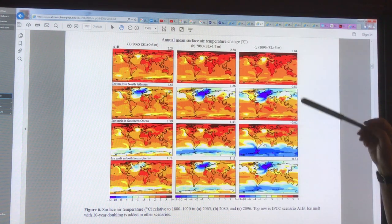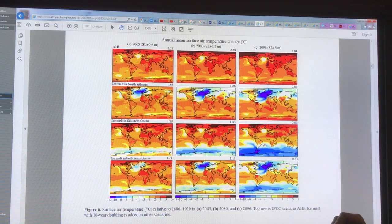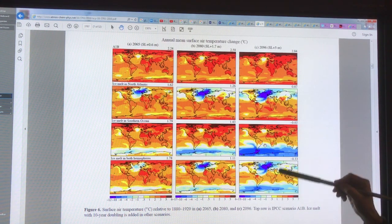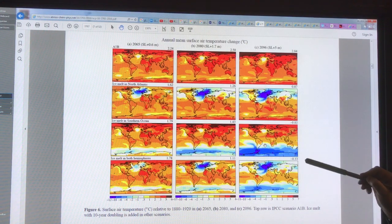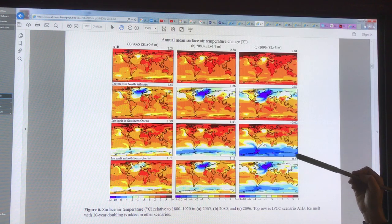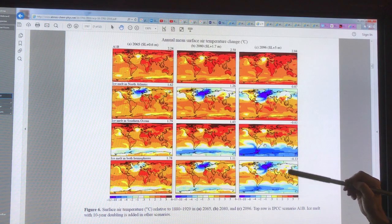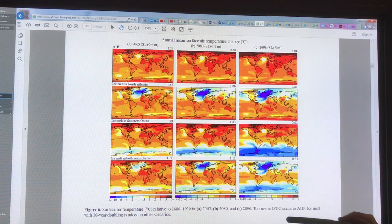Here's 2080 with a 1.7 meter sea level rise, so the temperature is moderated. And by 2096 with a 5 meter sea level rise and massive melt with 10 year doubling from both Greenland and Antarctica, you would actually have a slight temperature drop because of all that ice melted and water that goes into the ocean.